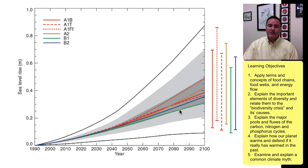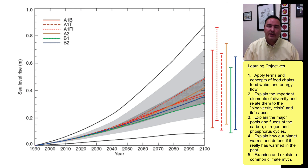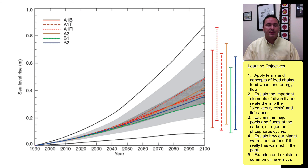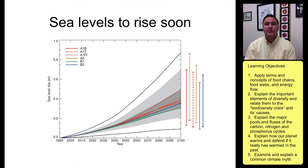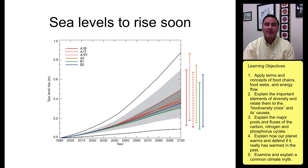As glaciers melt, the process feeds itself and they melt even faster — a major concern. The scientific consensus is that climate change is happening, global warming is happening, sea levels are rising, and humans have something to do with it. Where this leads in the future and whether we can change it remains to be seen, but if there's a chance we can change it, we should do something. Study the data and make informed decisions.